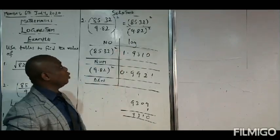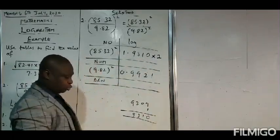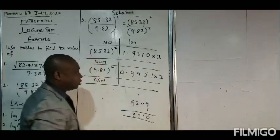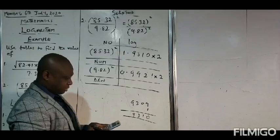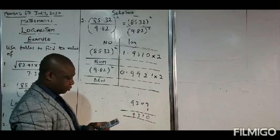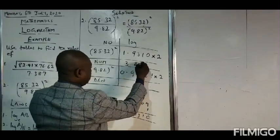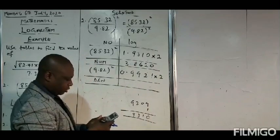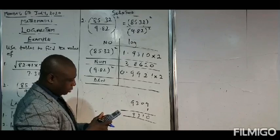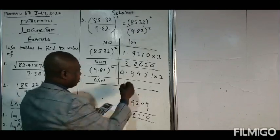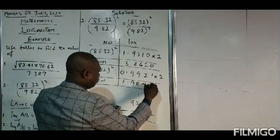Since the exponent is a whole number, we multiply the log reading of that number by that exponent, which is two, and the same applies to the denominator. Doing that: the numerator log is 1.9310 times two, giving 3.8620. The denominator log is 0.9921 times two, giving 1.9842.